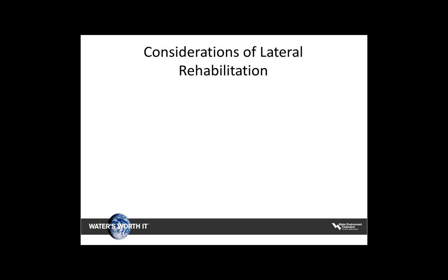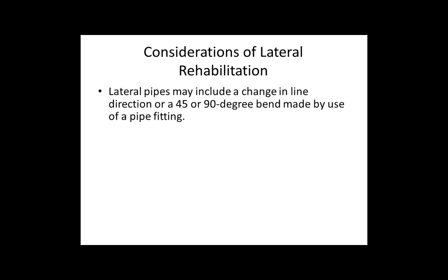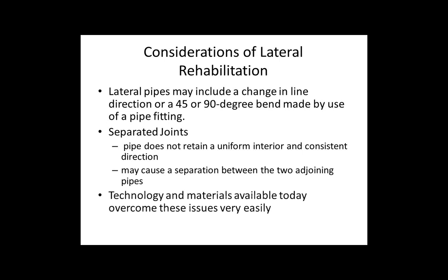Various considerations must be made when performing lateral rehabilitation. Some of them are changes in line direction or 45- or 90-degree bends due to various pipe fittings, varying pipe diameters within the same lateral pipe, and access to the lateral pipe itself. Technologies and materials available today are able to overcome these issues. The presence of a trained and certified inspector on site will allow you to know which technology is best suited to address those specific concerns.